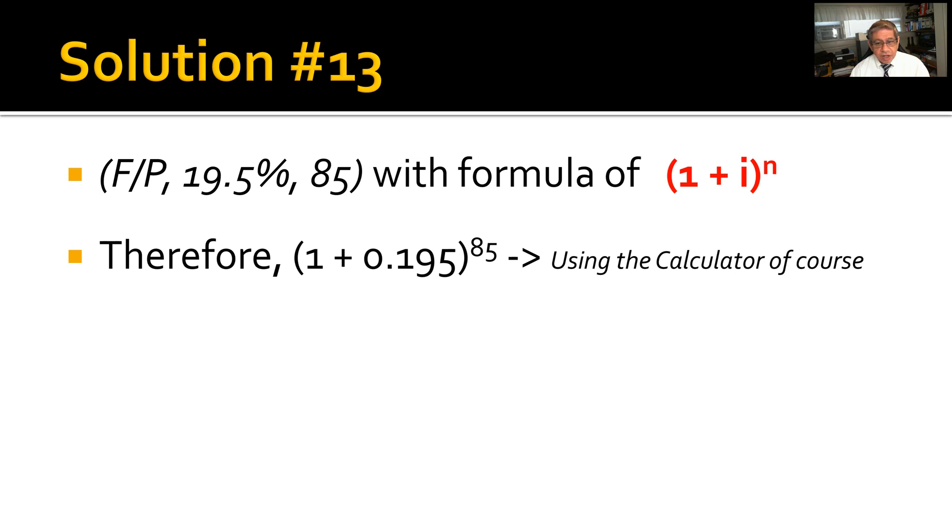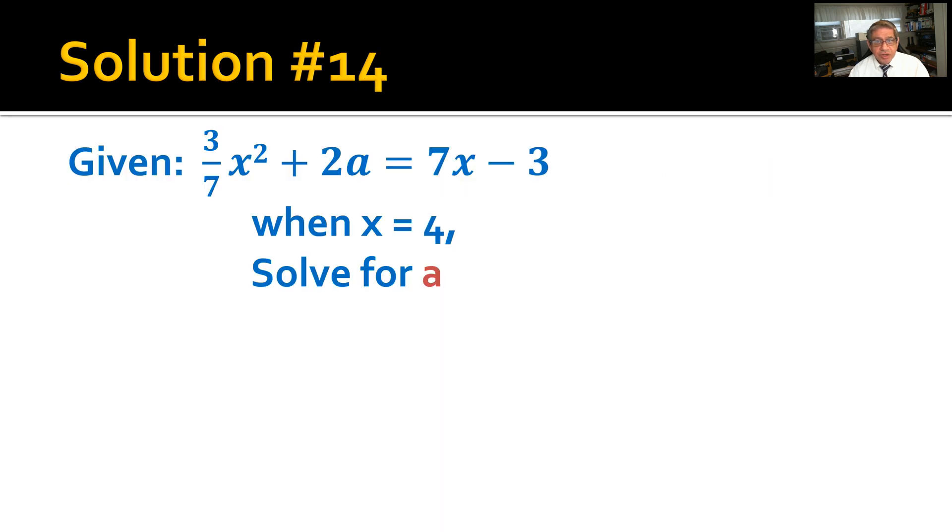Therefore, if you solve that on a calculator you get $3,769,397.60. Pretty good sum for a $10 investment—that's the power of compounded interest for long terms.